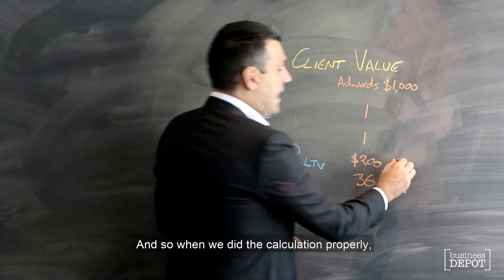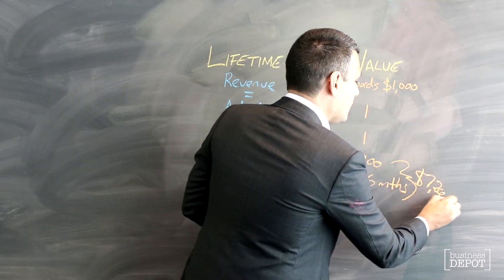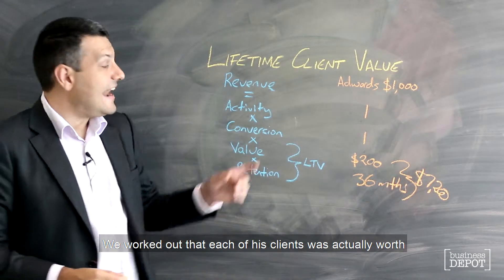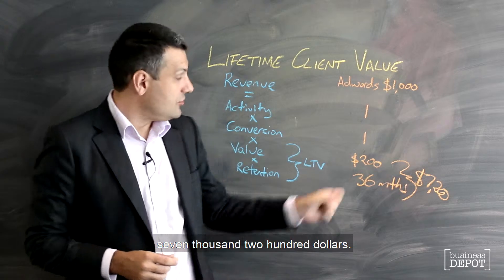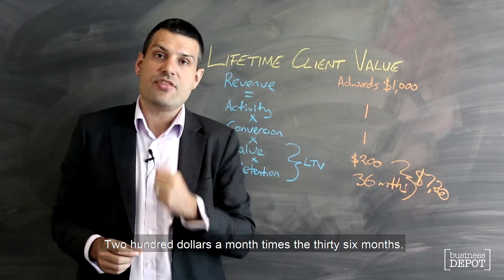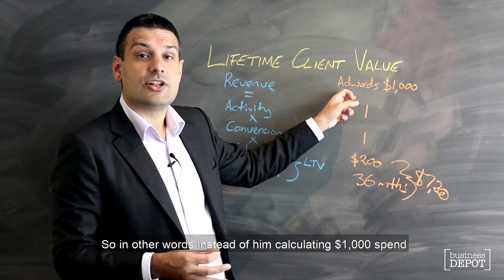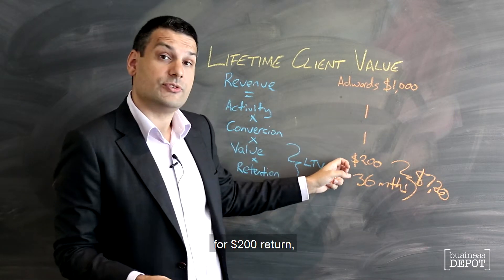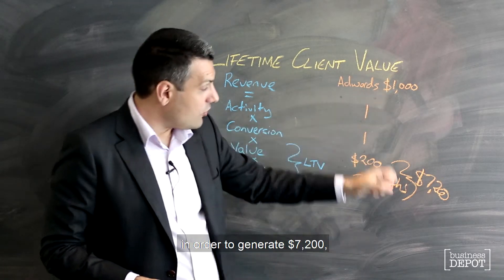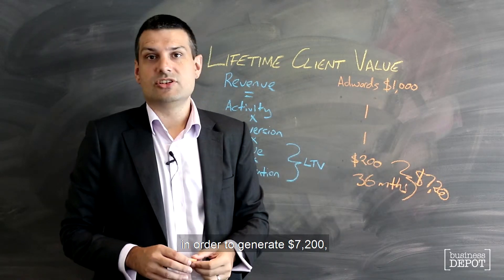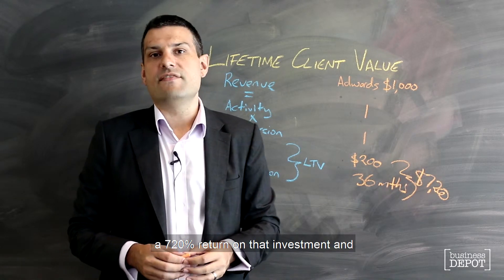What my client discovered was that on average his client stayed with him for 36 months — three years. So when we did the calculation properly, we worked out that each of his clients was actually worth $7,200. Instead of calculating a $1,000 spend for a $200 return, he was actually spending $1,000 to generate $7,200 — a 720% return on that investment.